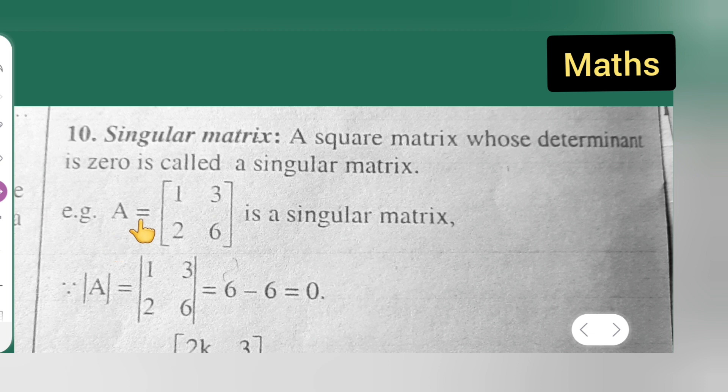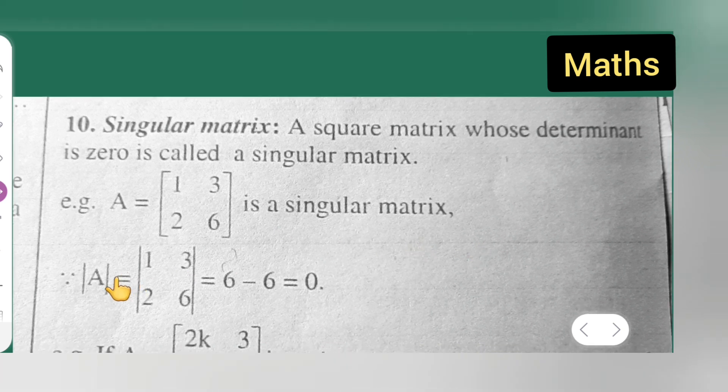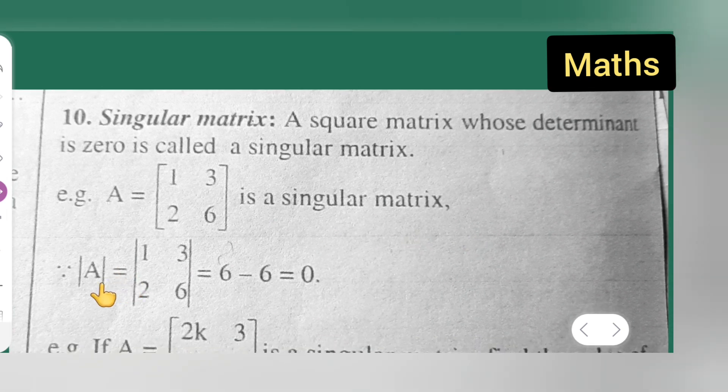Example: we have taken a matrix A = [1, 3; 2, 6] is a singular matrix. Now we have taken a determinant. How to find out the determinant of this matrix A? Put a determinant over here: |1, 3; 2, 6|.